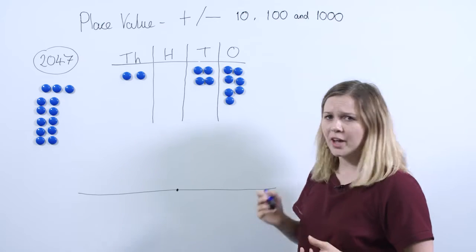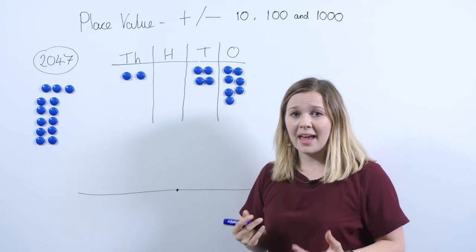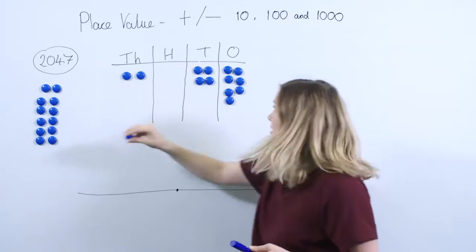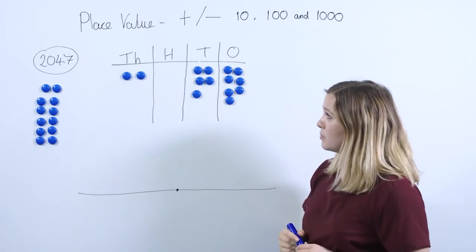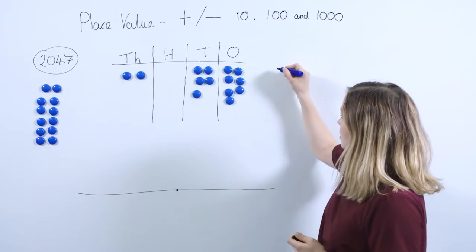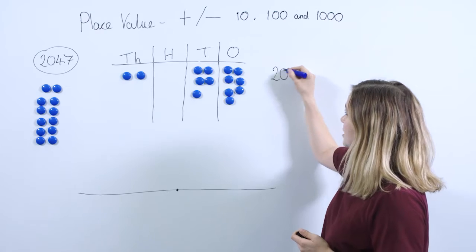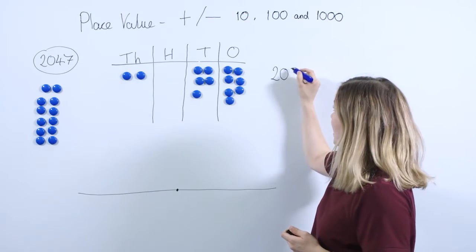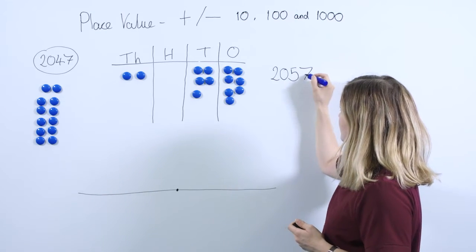The first thing that we're going to do is look at what happens when we add 10. This is quite simple—simply adding another 10 to our tens column. So rather than 2047, we've now got 2 thousands, still zero hundreds, five tens, and our seven ones are the same.